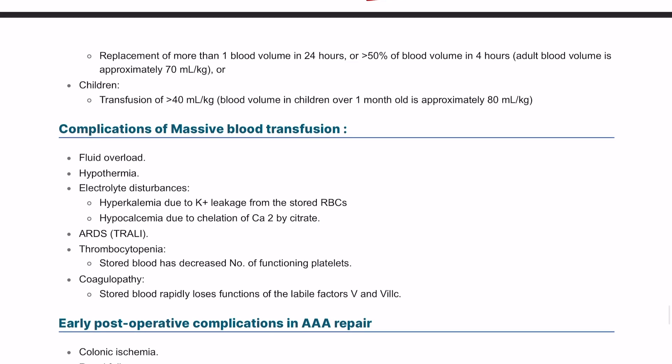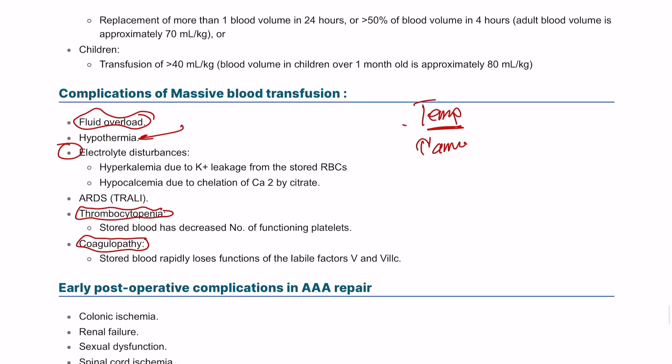Complications of massive blood transfusion include coagulopathy or disseminated intravascular coagulopathy and thrombocytopenia. It might have different temperature from the body, so it can lead to hypothermia. It might be high volume, leading to fluid overload and electrolyte imbalance. It might deposit in the lung, leading to ARDS, adult respiratory distress syndrome.